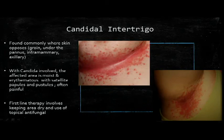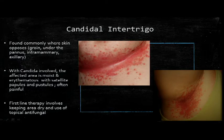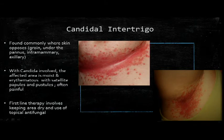Intertrigo occurs anywhere that opposing skin is constantly touching, like inguinal folds or under the mammary glands. The persistent rubbing degrades the upper layer of skin, leading to an inflammatory reaction. Diagnose with a KOH prep; a bacterial culture is helpful if there's secondary bacterial infection. Nystatin powder is commonly used, but an azole antifungal cream is preferred because it has antibacterial and anti-inflammatory effects. If initial treatment is unresponsive, treat with oral fluconazole. Also counsel on weight loss for obese patients, wearing absorbent clothing, keeping the area dry, and better diabetes control.